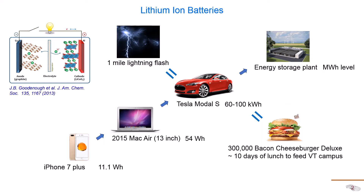To give some examples about the scale of energy — using a bacon cheeseburger and a lightning flash as references — we are really putting a lot of energy in this confined space. This means the safety of lithium-ion batteries is a very critical issue. When we talk about increasing energy density, we also need to consider safety, and the two don't really get along very well.